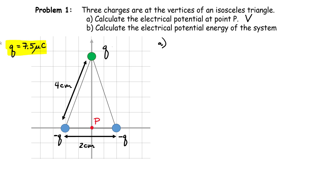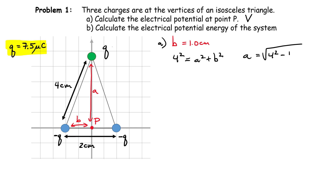The top charge is positive and the blue charges are minus Q — same magnitude but different sign from the green one. Each charge has a magnitude of 7.5 microcoulombs. I'll define the distance from each blue charge to point P as B, and the distance from the top charge to point P as A. You can see we have a right-angle triangle. B equals one centimeter. To find A, use the Pythagorean theorem: 4 squared equals A squared plus B squared, giving A equals the square root of 15, which is approximately 3.87 centimeters.